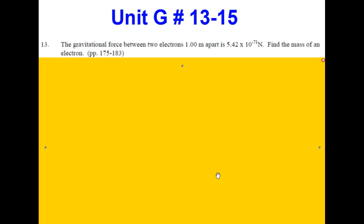Welcome to the Solutions to the Regents Physics Circular Motion and Gravity Problem Set, Problems Number 13 and 14. Problem 13: the gravitational force between two electrons one meter apart is 5.42 times 10 to the negative 71 newtons. Find the mass of an electron.